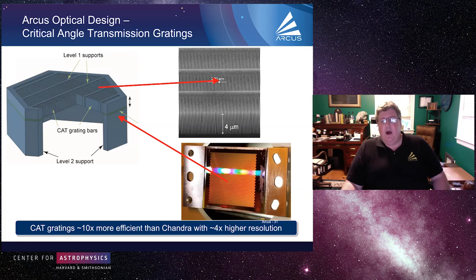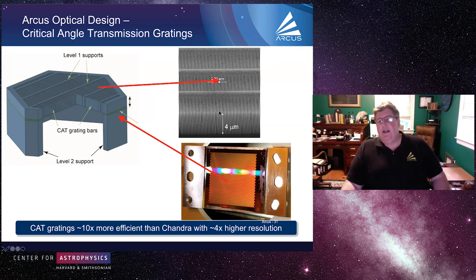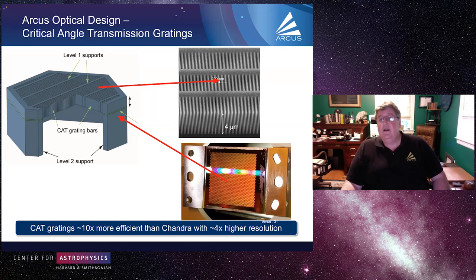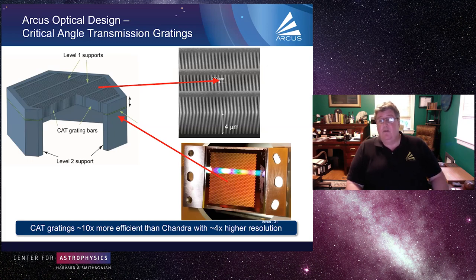The CAT gratings have very long, thin, finely spaced bars — about 4 microns deep and separated by about 200 nanometers. That depth is about 10 times deeper than the Chandra HETG gratings, which is basically where the additional efficiency comes from. The Chandra HETG gratings are about 3% efficient; these are about 30% efficient. We also read them out in fifth and sixth order rather than first and third order with Chandra, giving about four times higher spectral resolution. More efficiency and higher resolution — that is the big win with ARCUS.